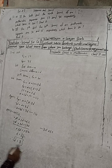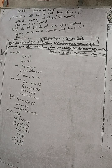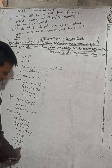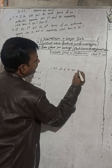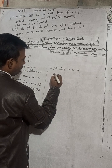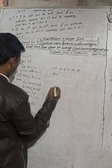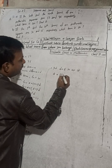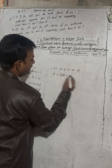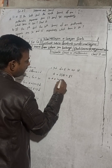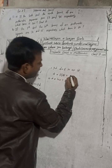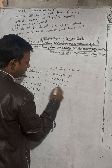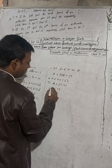Therefore d is equal to 8. The common difference is 8. Now put d equals 8 in equation 1: a plus 5d equals 52, so a plus 5 into 8 equals 52. This implies a plus 40 equals 52, therefore a is equal to 52 minus 40, so a equals 12.